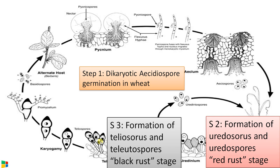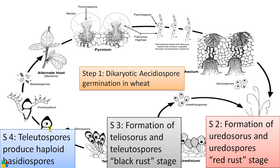Teliospores are formed on a specialized structure called the teliosorus, similar to the uredosorus. At the end of the growing season there is a dormant stage — teliospores can survive in unfavorable conditions. The two nuclei in each cell fuse, or karyogamy occurs, forming a diploid nucleus. This diploid nucleus then undergoes meiosis, forming four haploid nuclei.